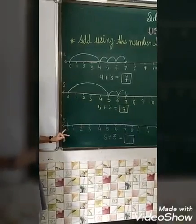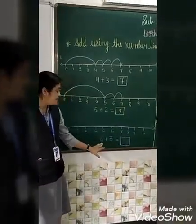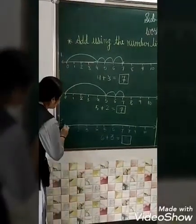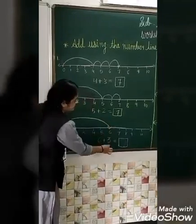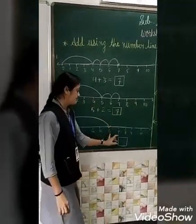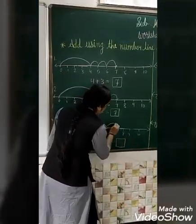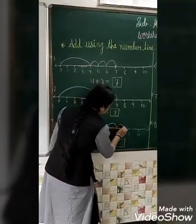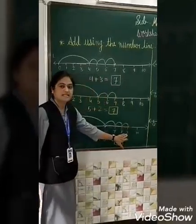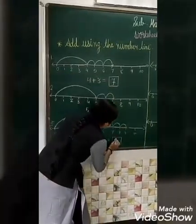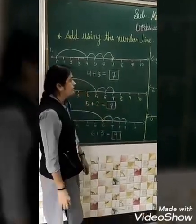Next: 6 plus 3. We go from 0 to 6. Then 3 jumps: 6 after 7, 8, 9 — that is 1, 2, and 3 jumps. The answer is 9.